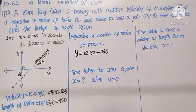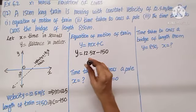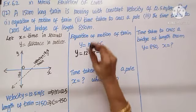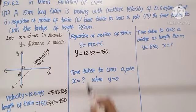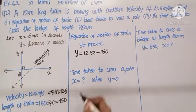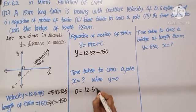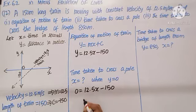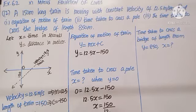Putting Y equals 0: 0 equals 12.5X minus 150, so 12.5X equals 150, giving X equals 150 divided by 12.5, which equals 12 seconds. That is the time taken to cross a pole.